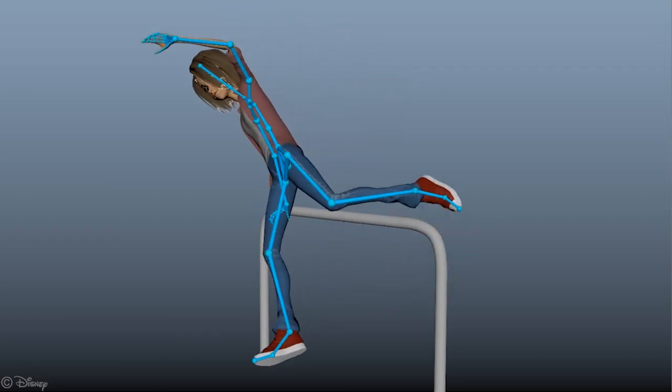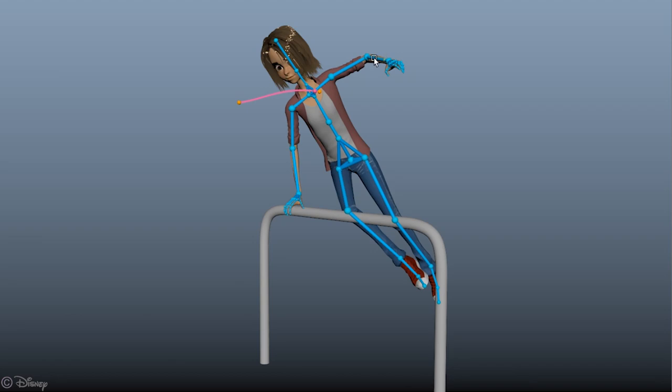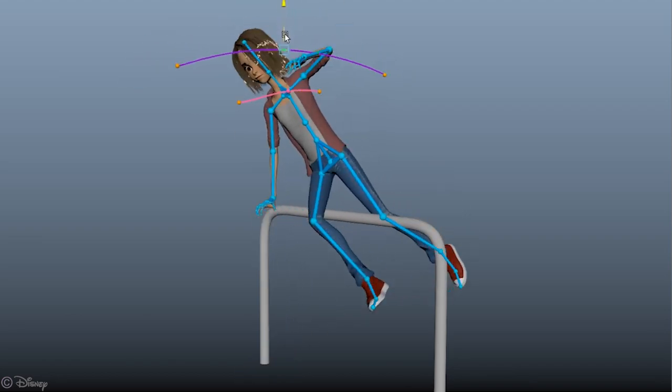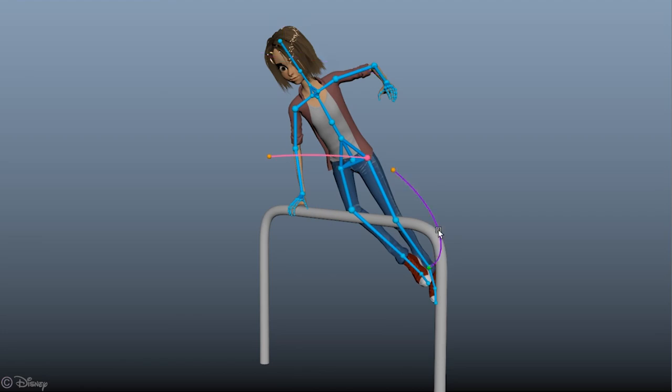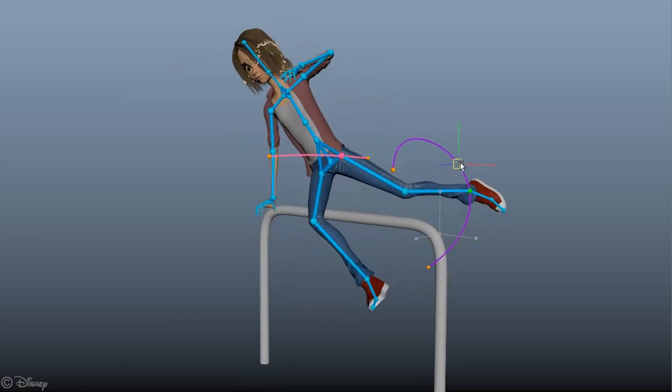The system we propose abstracts the consideration of FK versus IK and the hierarchy of controllers. It provides control on the interpolation of any part of the body through a spacetime curve interface.